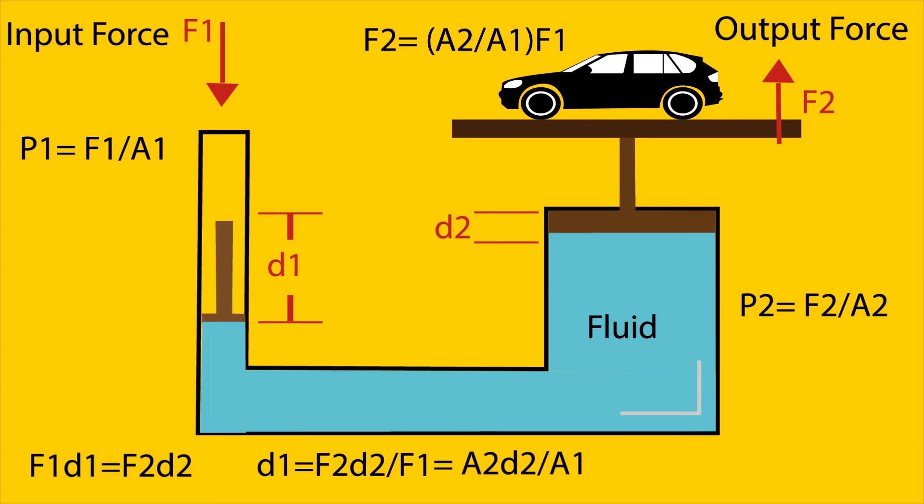Now cross section of A1 is small, so we can generate greater amount of pressure easily by applying a moderate amount of force. Now the pressure will be transmitted equally throughout the fluid and reach the larger piston.